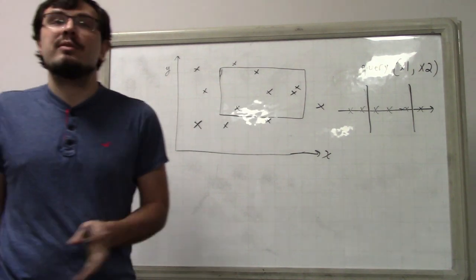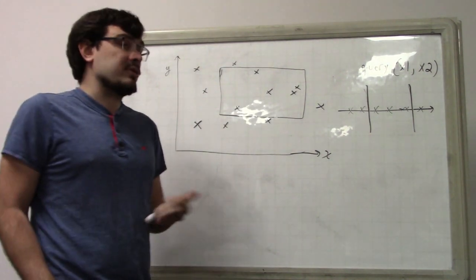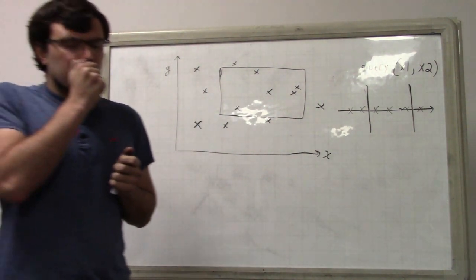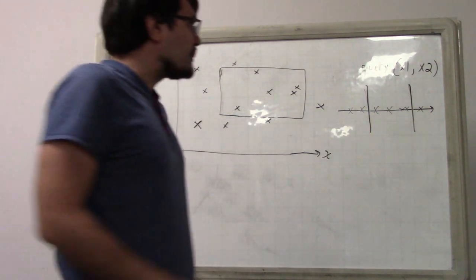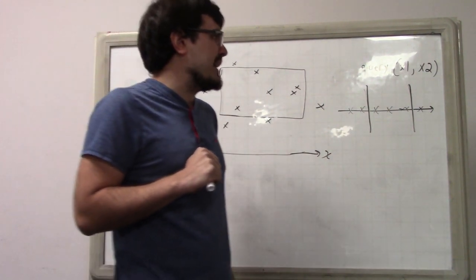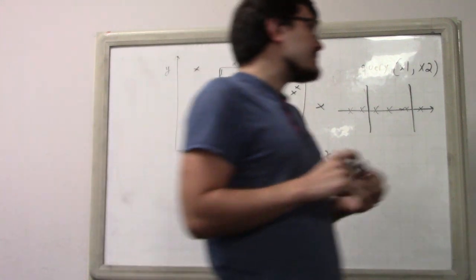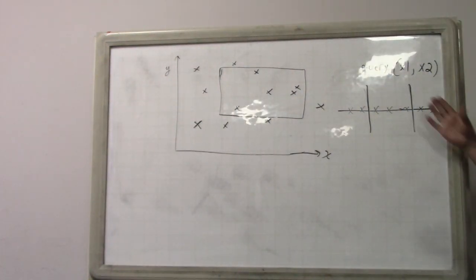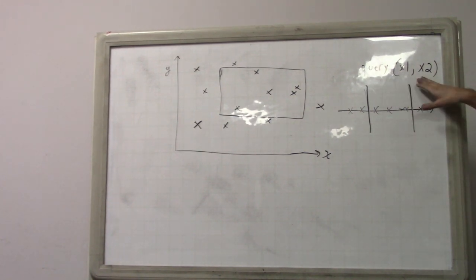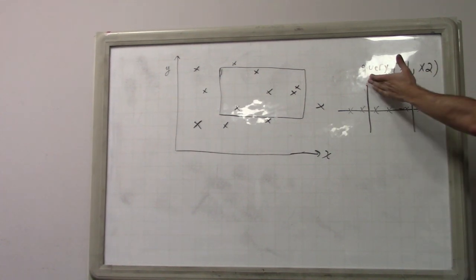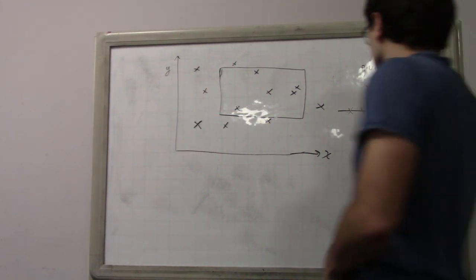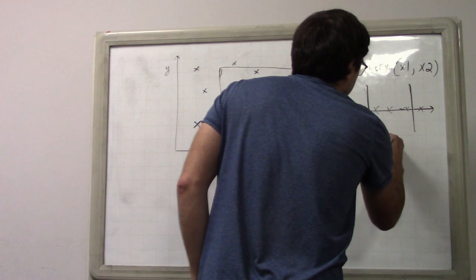It'll have to be what's called an order statistic tree. We'll see why a regular binary tree isn't quite enough here. For the static case, we can just store the points as a sorted array of x-coordinates.